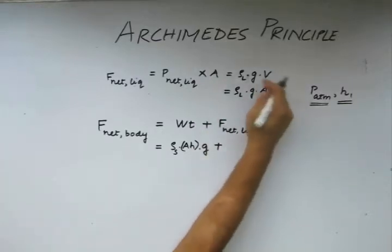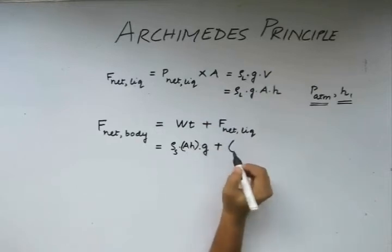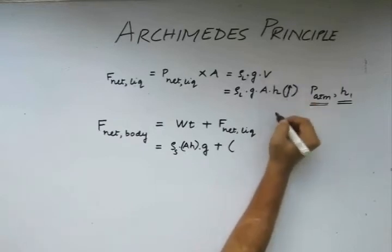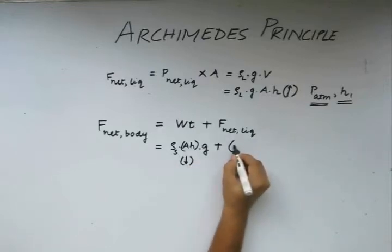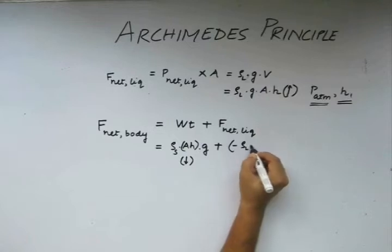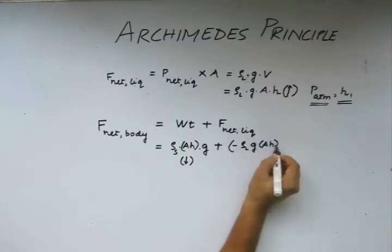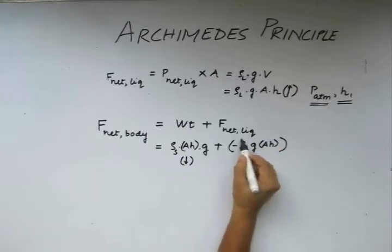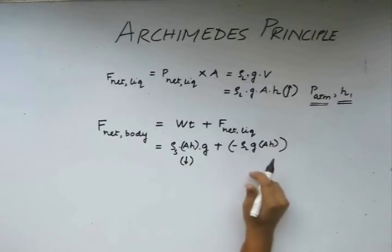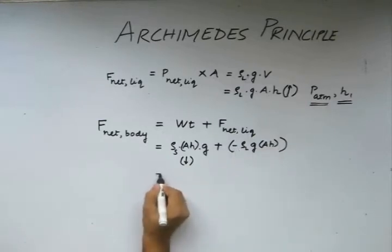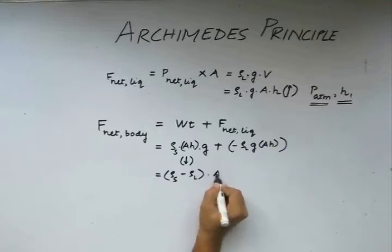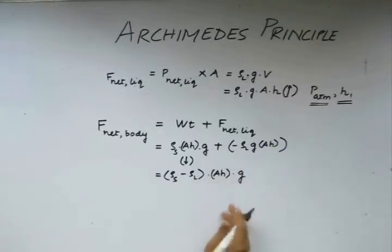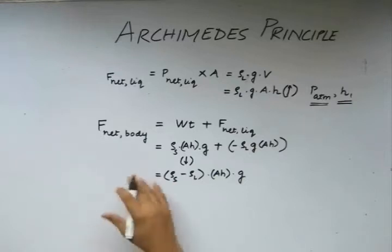The net force due to the liquid is basically this quantity. Because this is upthrust applied in the upward direction and the weight acts in the downward direction, we write the net force as this. The quantity without the minus sign is acting in the upward direction, hence the minus sign appears. This is the net force acting on the body due to its weight and the pressure forces.